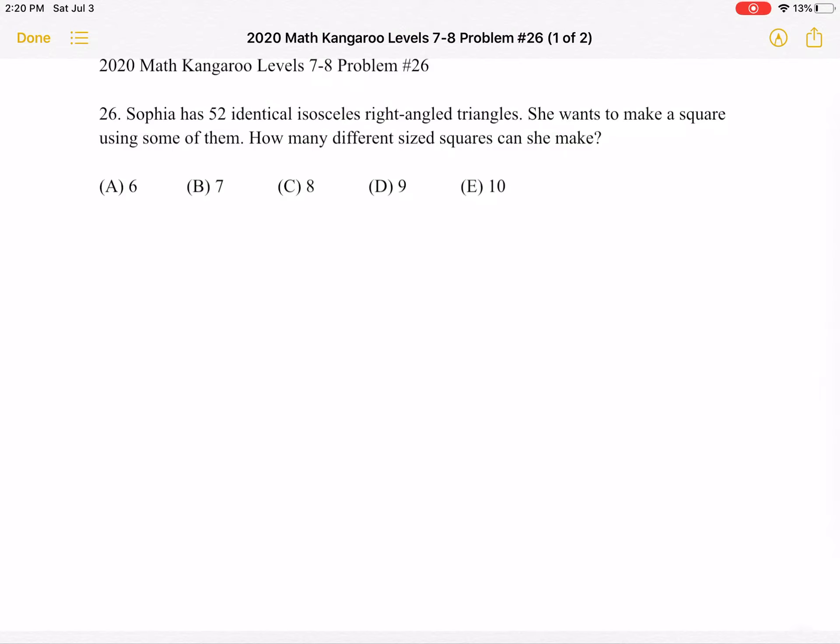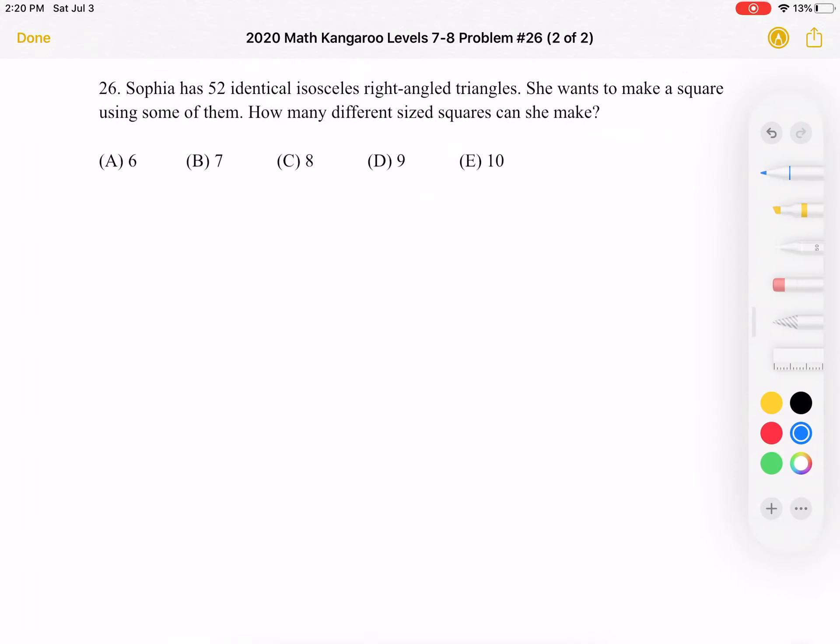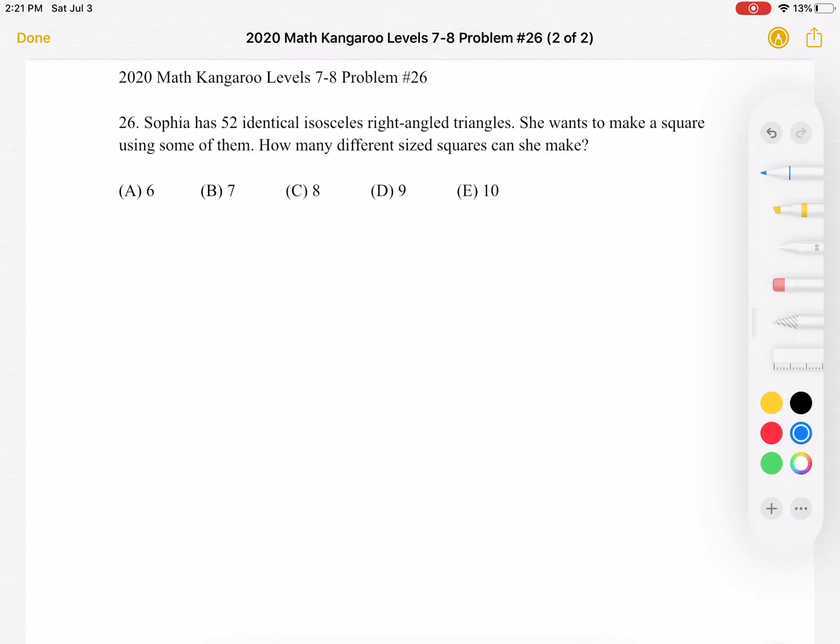This is the problem as it originally appeared on the test, and here is where we'll be doing the solution. So, to start, we have Sophia with 52 identical isosceles right-angled triangles, and she wants to make different sized squares. The first thing that comes to mind when you think of isosceles right triangles and squares is probably this orientation shown right here. And we can call this form A of making a square.